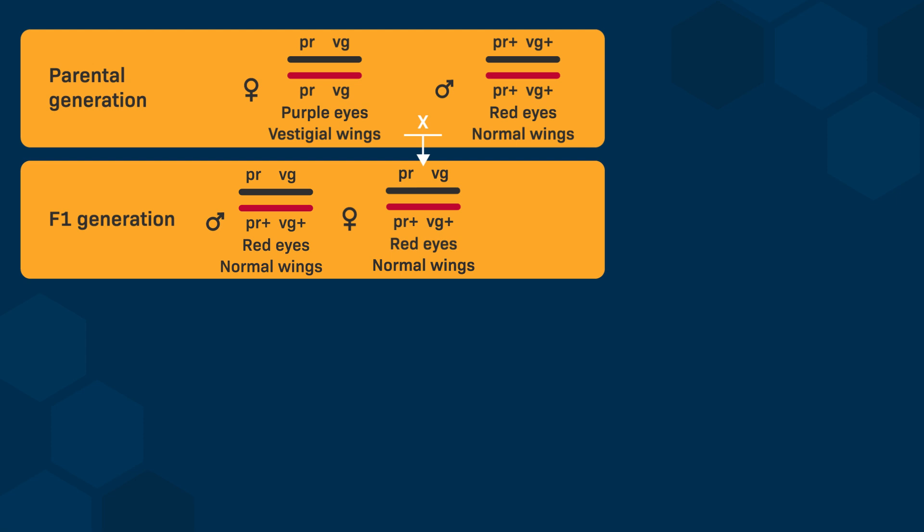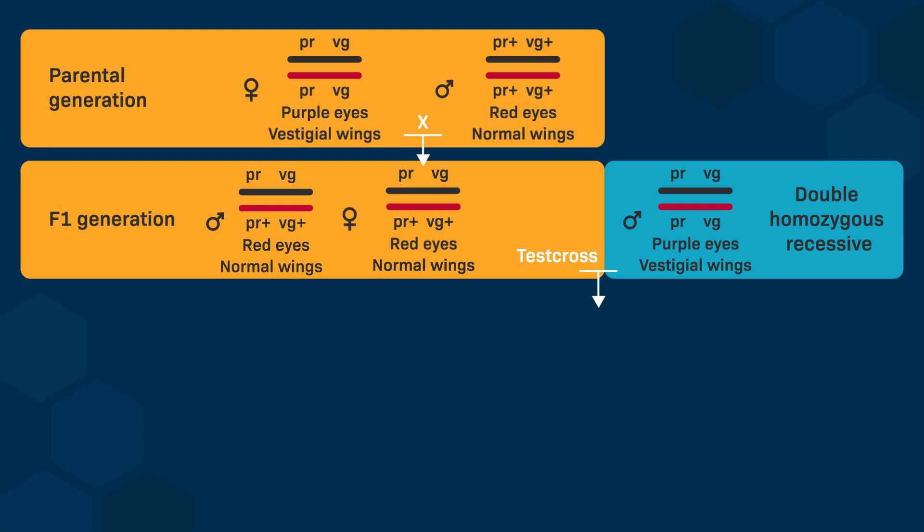Now, let's take a female from the first generation that has red eyes and normal wings and cross her with a double recessive homozygous male. This male has two copies of the recessive PR allele, meaning he has purple eyes, and two copies of the VG allele, so he has vestigial wings. This type of cross is called a test cross — a cross between one parent from the F1 generation and a double homozygous recessive of the two traits being studied.